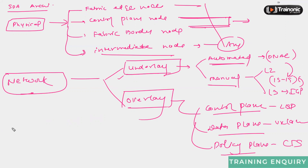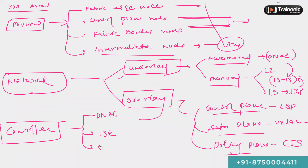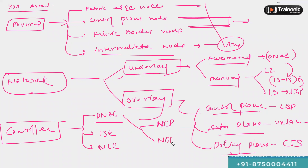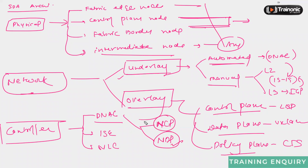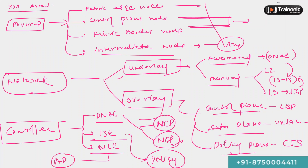Third, we have the controller layer. In the controller layer we have different controllers: we have DNAC, we have ISE, and we have the fabric WLC. In DNAC we have two things: the data control platform and the data platform — the CP and DP — responsible for assurance and responsible for pushing configurations to the network. ISE acts as the policy plane, from where we can apply a variety of security-related policies. The WLC is going to manage all the access points of the network.